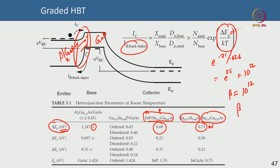In reality you do not get that theoretical beta because in a highly scaled modern HBT there are many parasitic components that come into picture. Specifically the capacitances — even the intrinsic capacitances can be very large, and the diffusion capacitance can be very large. All of these affect the cutoff frequency and even the beta, but it is still very, very large.